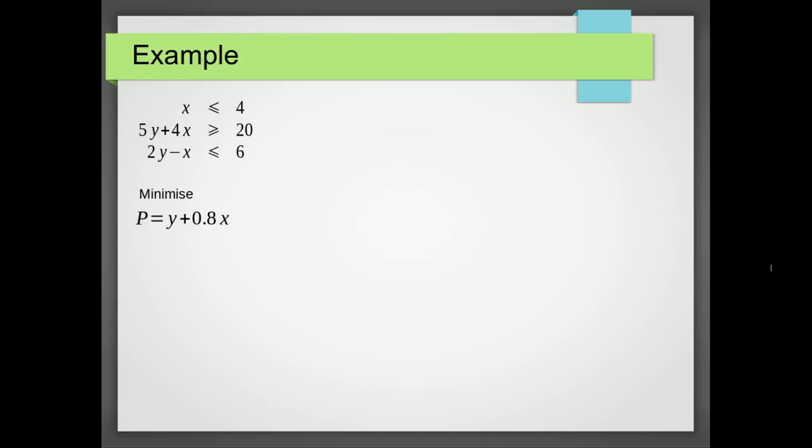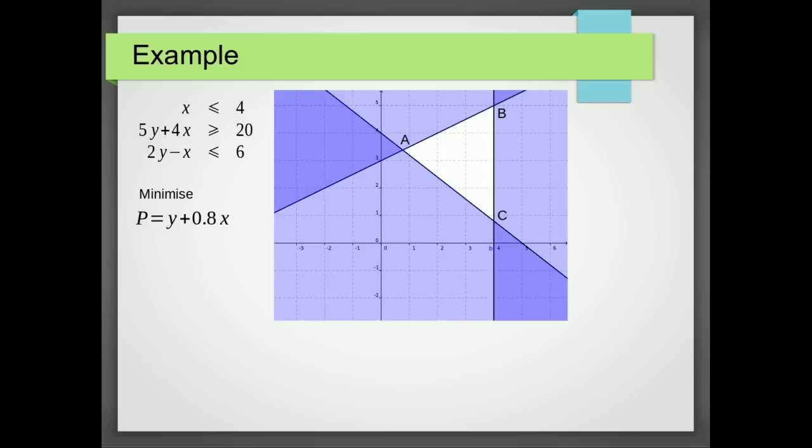Okay, so here's an example. We have our constraints: x is less than 4, 5y plus 4x is greater than or equal to 20, and 2y minus x is less than or equal to 6. And this time, we're trying to minimize P equals y plus 0.8x. So the first thing we do is we draw our feasible region, and I've also labeled the points A, B, and C.